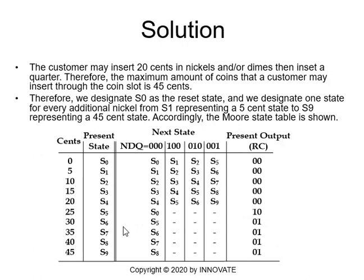If the machine has 45 cents — for example, two dimes then a quarter, or four nickels then a quarter — this is state S9. From S9 it goes to S8 and releases one nickel; from S8 to S7 releasing a second nickel; from S7 to S6 releasing a third nickel; then S6 to S5 releasing a fourth nickel. Finally S5 goes to S0 and returns the candy, so four nickels are released and the candy is dispensed.